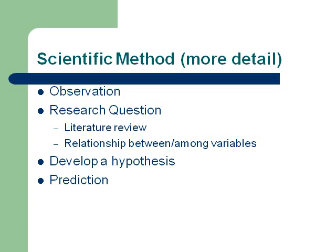Whatever prediction you come up with should have a couple of things. It should be logical — usually there are if-then statements that are logically related. It should make sense. It should be testable — one key thing is you have to be able to measure all the variables you're interested in. For example, if someone says 'if your chakras are aligned you'll have good health,' we can measure good health fairly well, but there really isn't an objective measure of chakra alignment agreed upon by Western science, so that probably wouldn't be a testable prediction.